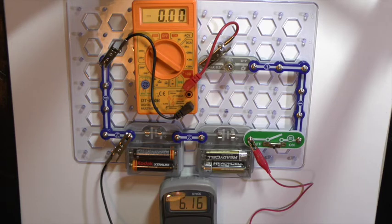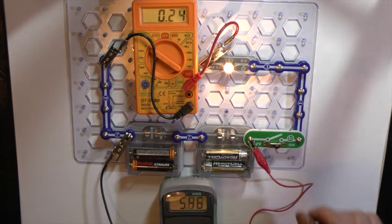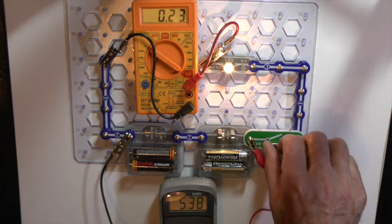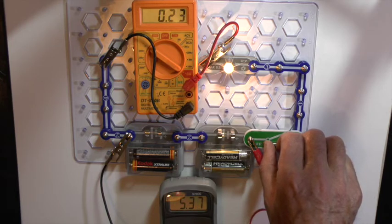So we've got this measuring the EMF, 6.16 volts. We switch on, the bulb lights, of course, and current flows around about 0.23 amps. We'll wait till it settles down about 5.38, perhaps 5.37 volts, 0.23 amps.